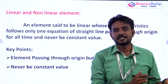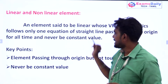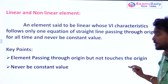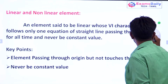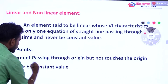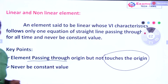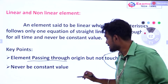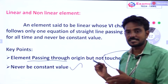If we get an input, the curve will pass. It will never be constant. Here is the key point: a linear element must pass through the origin, not just touch the origin — this is the main thing. It must pass through the origin, and the value must never be constant.